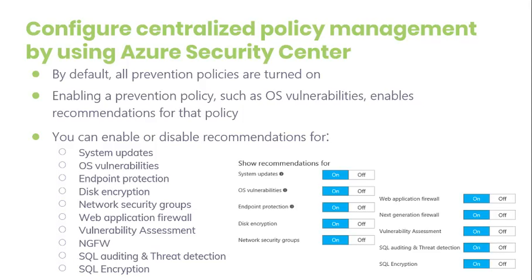Disk encryption: recommend enabling disk encryption on all VMs to enhance data protection at rest. Network security group: recommend configuring network security groups to control inbound and outbound traffic to VMs with public endpoints. This policy also assesses inbound security rules. Web application firewall: extend network protection beyond network security groups — Azure Security Center will discover deployments for which a next-generation firewall is recommended and allow you to provision a virtual appliance. Vulnerability assessment: recommend that you install a vulnerability assessment solution on your virtual machines.